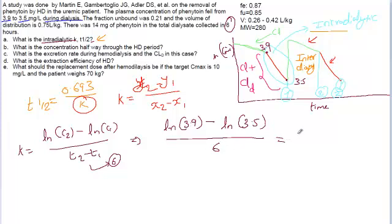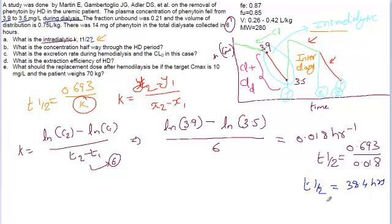So if you solve for this one, we'll have a value of 0.018 hour inverse. So what is the t-half now? T-half is again 0.693 by 0.018. So the value is 38.4 hours. The t-half of intra-dialytic is 38.4 hours.